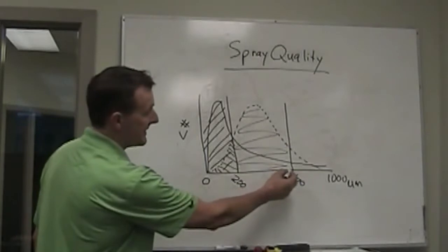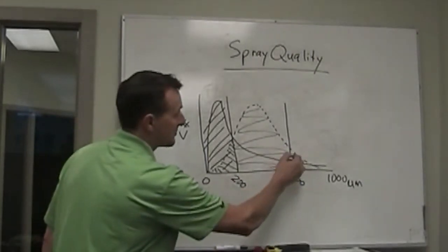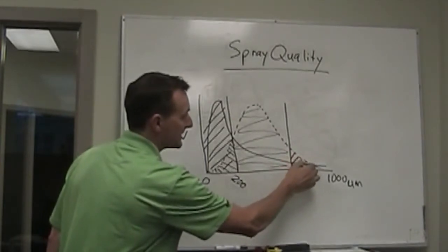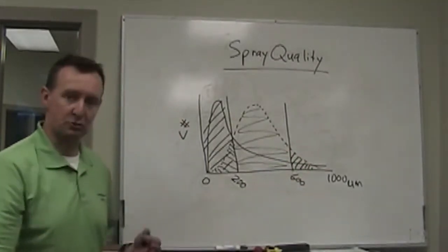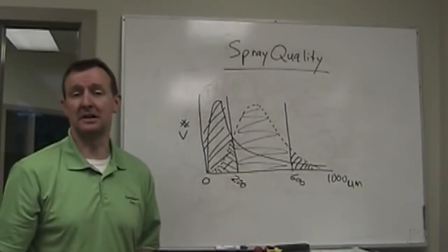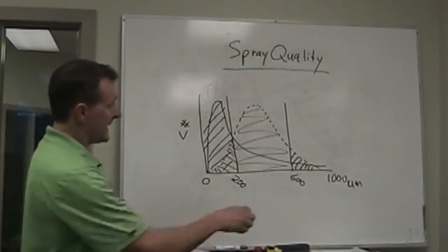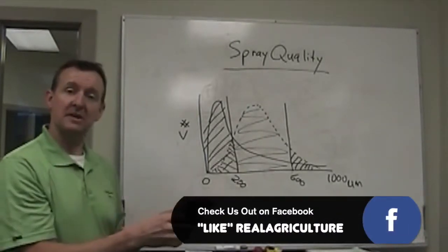On the other hand, anything bigger than that, bigger than 600 microns is an arbitrary number, probably is not going to do much. First of all, as you can see, there's not many droplets there. And second of all, they're so big that they'll probably bounce off and they might not contribute much to coverage and so forth. So we're quite cautious about that. So that's kind of the information we get from lasers.